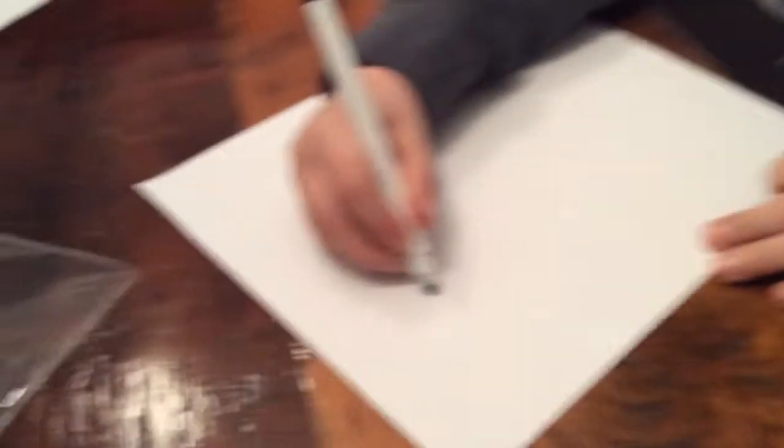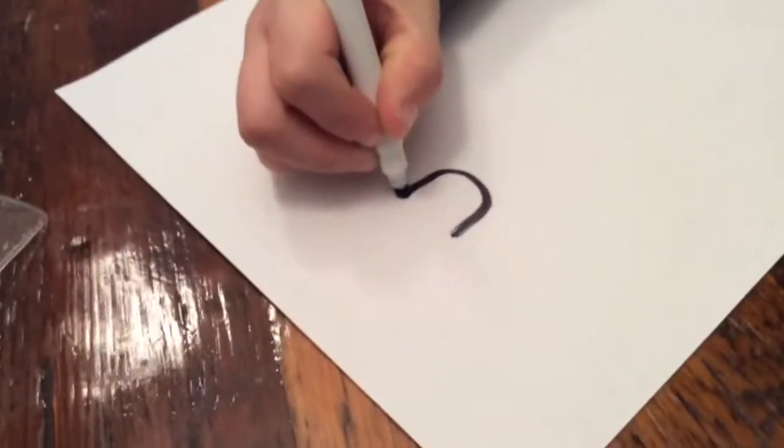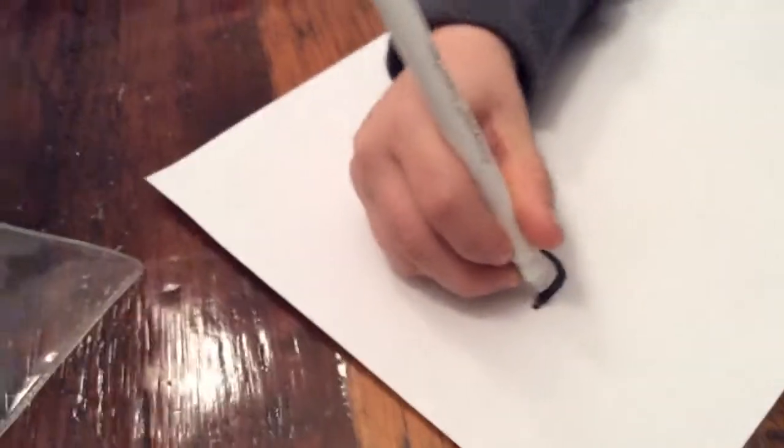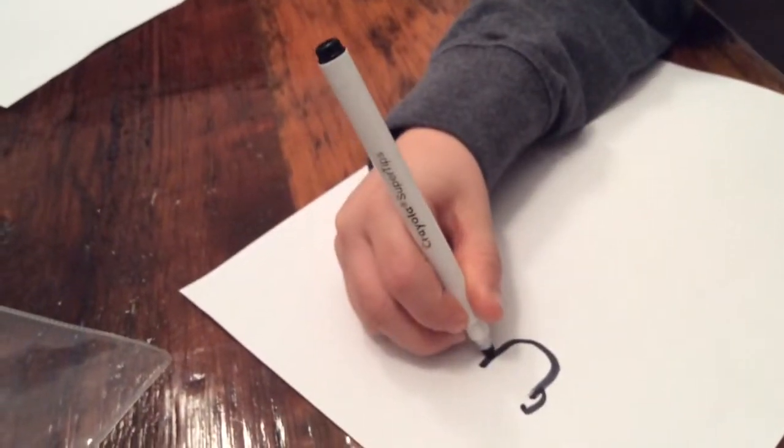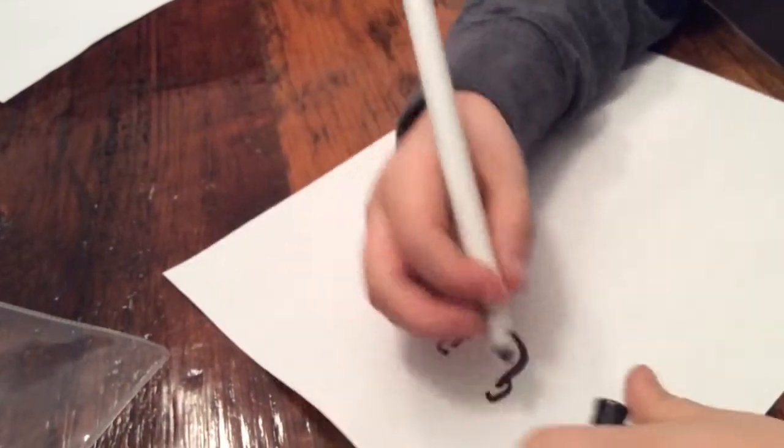So first, you're going to start off with a U, like that, and then like C-shaped ears, like that. Okay?